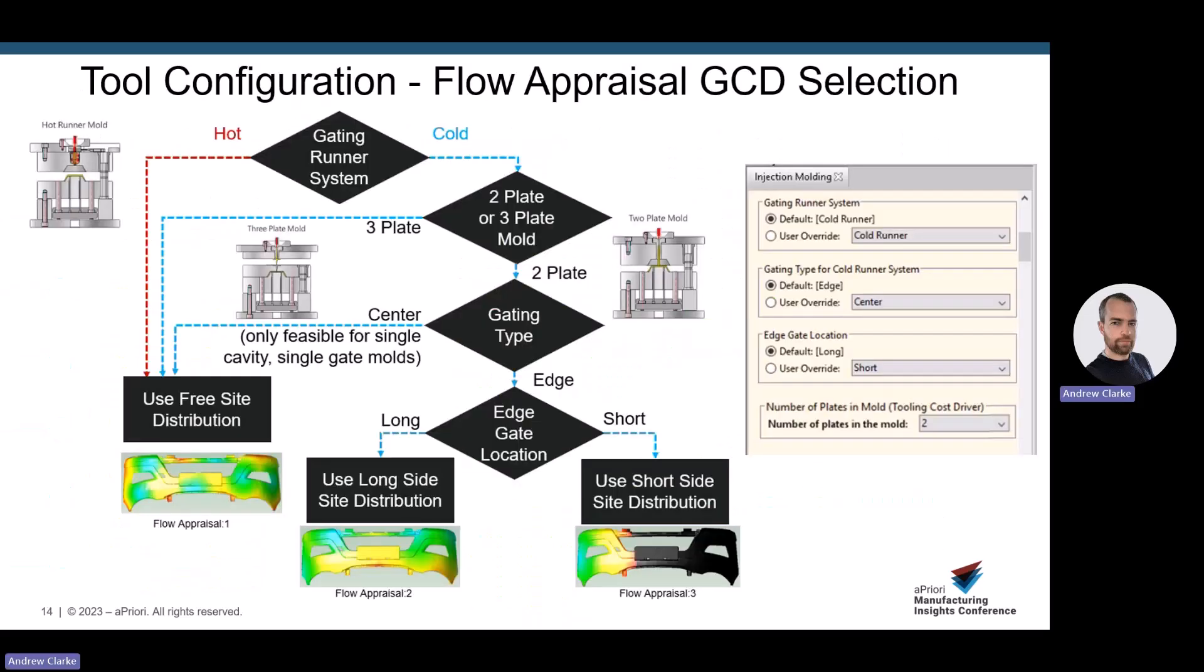Now, so far the examples I've given have been HotRunner configurations. We also support multiple configurations of ColdRunner tools, all controlled by the user via the process setup options. Users can even override the number of gates should they want to.